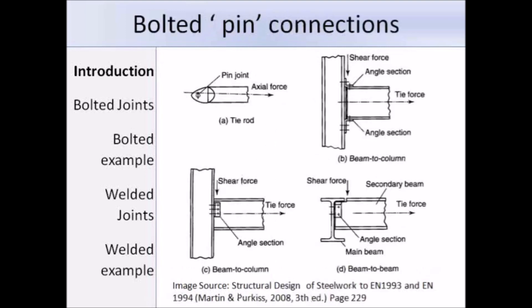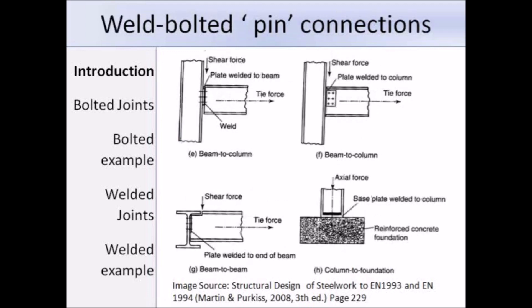Here are some examples of bolted pin connections: a tie rod and three examples of beam-to-column bolt connections. Some more examples of pin connections include beam-to-column, beam-to-beam, and column-to-foundation connections.